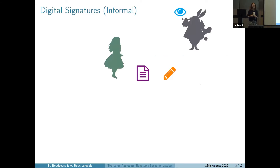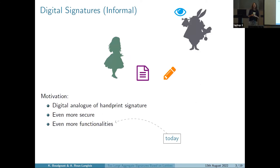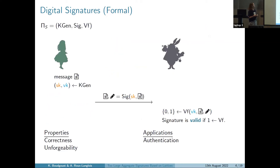Even though I think I'm in a cryptographic audience, let's remind ourselves what the motivation of digital signatures are. The main motivation is to have a digital analog of handwritten signatures, but we can hope for even better security than in the handwritten analog, and even more functionalities — and it's exactly in this last part where aggregate signatures falls into. A digital signature is composed of three algorithms: key generation, signature, and verification.